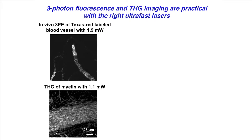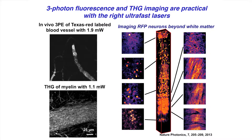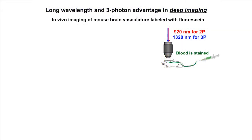With the right laser, three-photon excitation becomes practical. With only a few milliwatts on the surface of the brain, we can do three-photon excitation of Texas Red-labeled blood vessels and see third harmonic generation of myelin. With 20–30 milliwatts, we can image all the way down to the hippocampus in vivo, showing red fluorescent protein-labeled neurons, different cortical layers, white matter, and hippocampal layers.